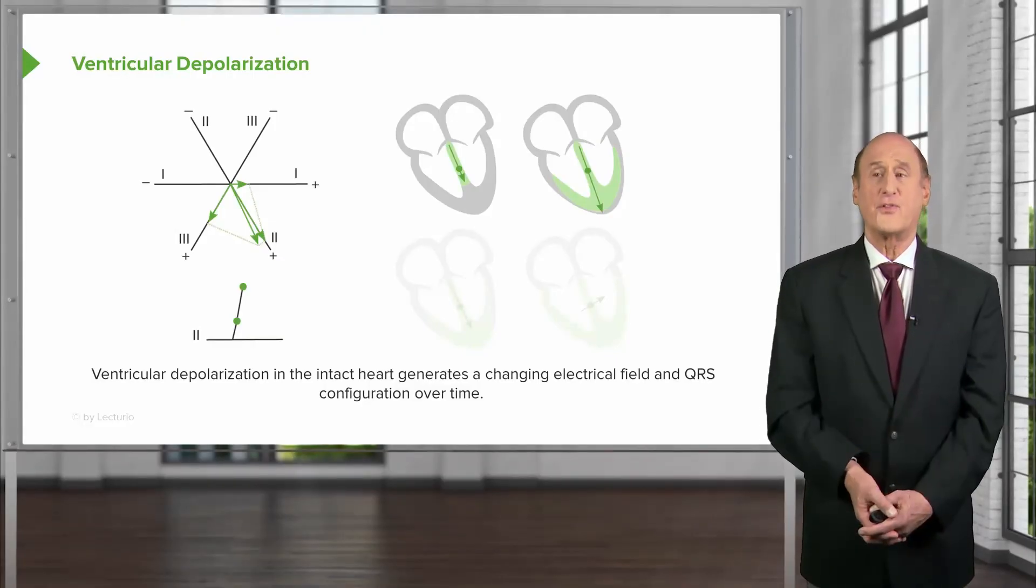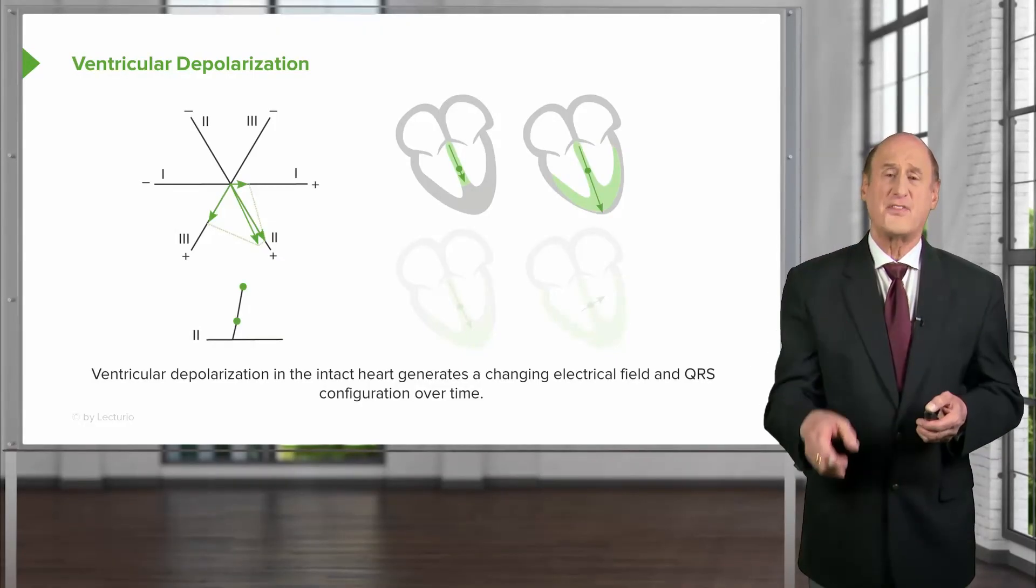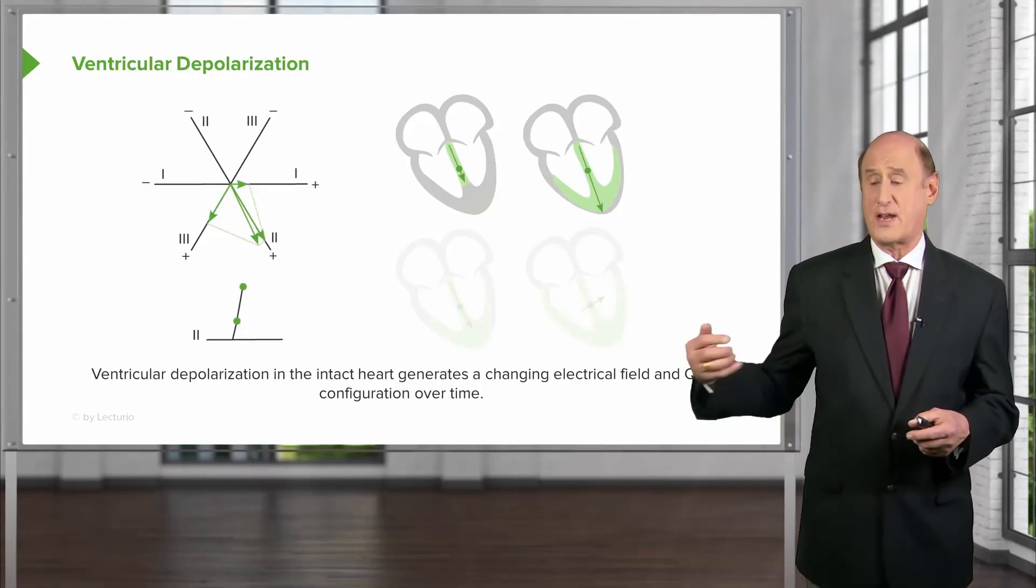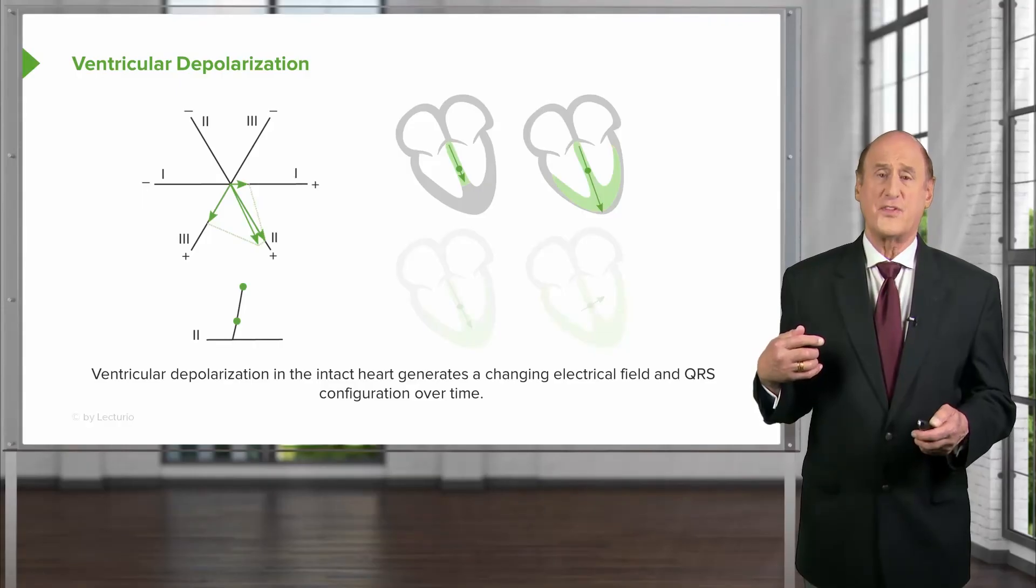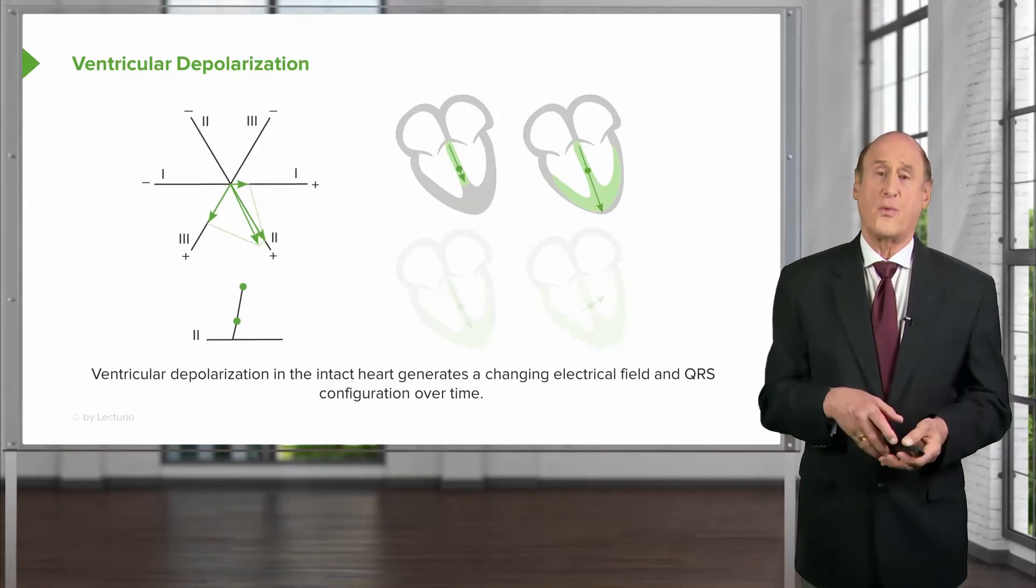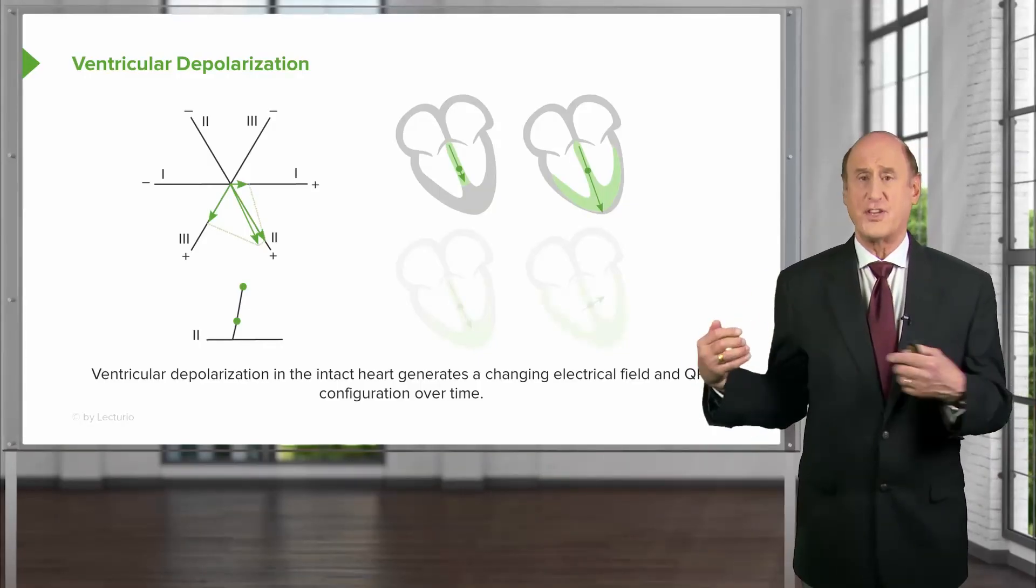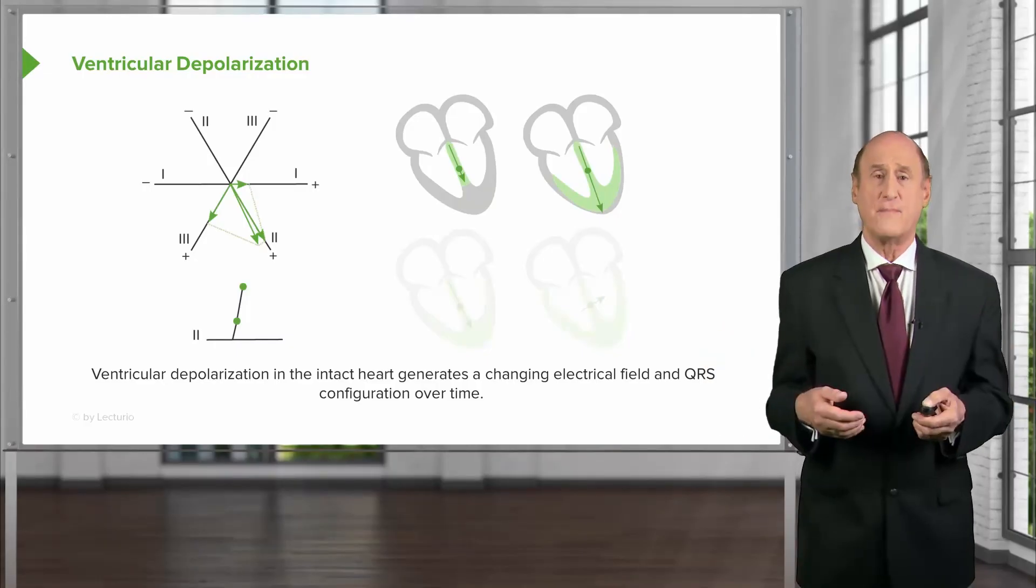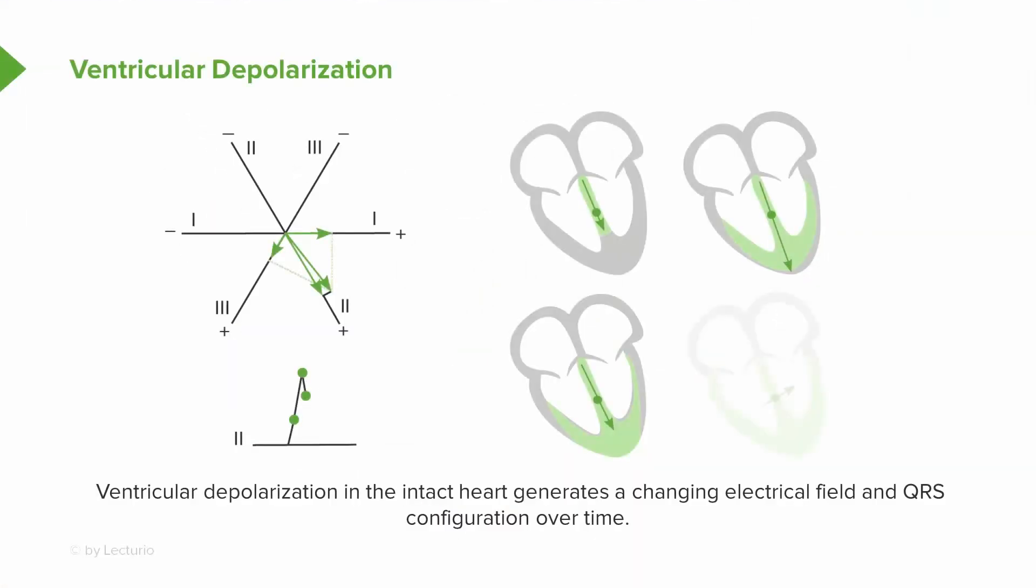And that's why, for example, you saw on the QRS, there's some positive and there's some negative. Depending on where the electrode is looking, if the electrode is looking from here, it's going to see different than if the electrode is looking from here, because the wave of depolarization from here will be coming towards this one at a certain point when it's going away from the one over here and vice versa. And we'll see some examples of that.